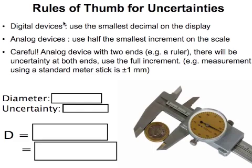One thing you have to be careful about is that when you have an analog device that has two ends, say a ruler, there's some uncertainty with both ends of the measurement often. And so you will generally have to use full increments. So with a standard meter stick, you would use plus or minus one millimeter.